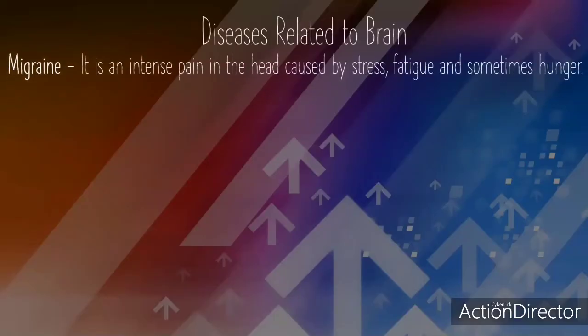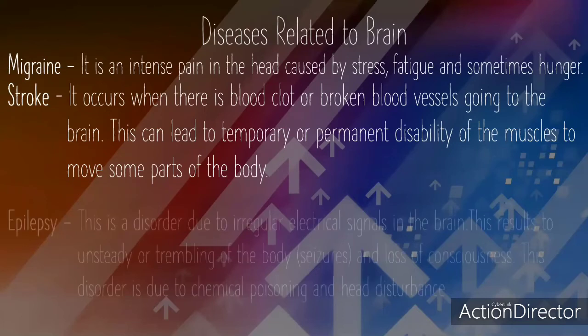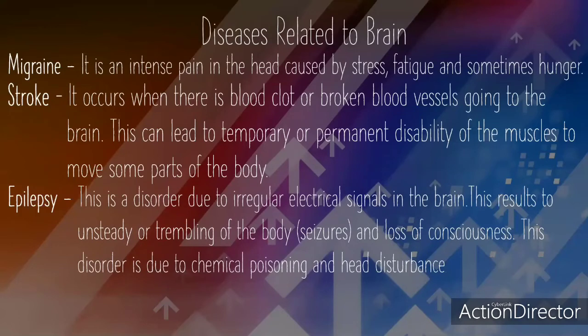Diseases Related to the Brain. Migraine is an intense pain in the head caused by stress, fatigue, and sometimes hunger. Stroke occurs when there is a blood clot or broken blood vessels going to the brain. This can lead to temporary or permanent disability of the muscles to move some parts of the body. Epilepsy is a disorder due to irregular electrical signals in the brain, resulting in unsteady or trembling of the body and loss of consciousness.